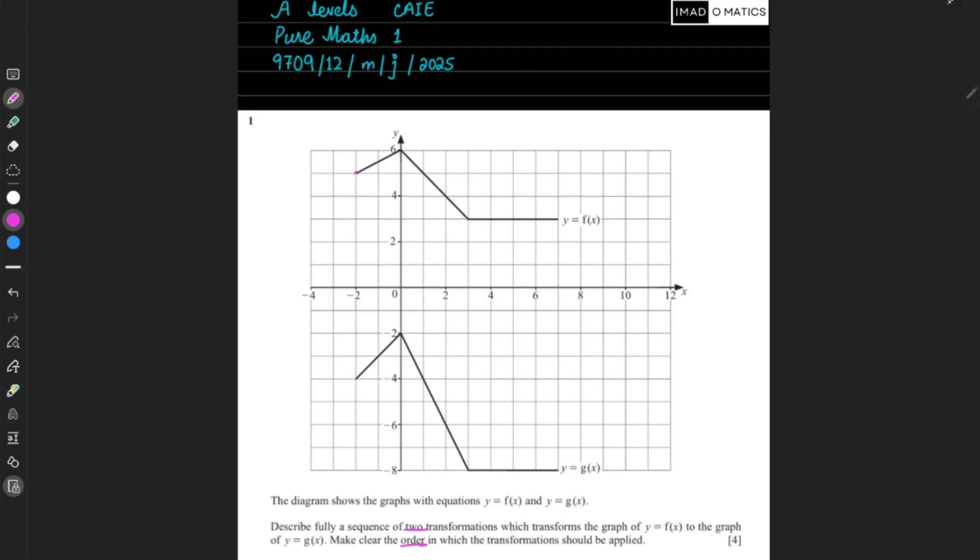You can see that your graph has shifted to this place, so that means it has translated some units downwards. So you can write it to be translation k units down. This is your first analysis.